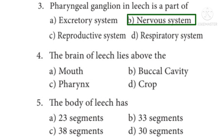Question 4: The brain of leech lies above the — Options: A. Mouth, B. Buccal cavity, C. Pharynx, D. Crop. The answer is Option C: Pharynx.